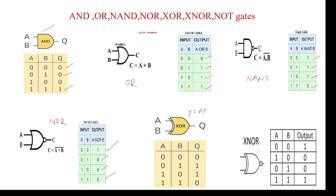The XOR output is A·B̄ + Ā·B. For example, taking inputs A=0 and B=0: Ā = 0 bar = 1, B = 0, so the output is 0. The XNOR output is A·B + Ā·B̄ whole bar. For example, 0·0 + 0·0 whole bar equals 1.